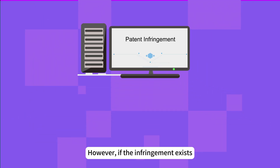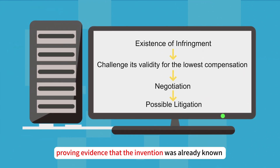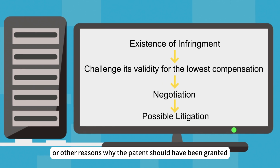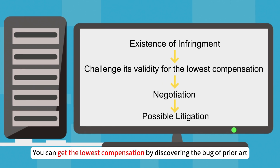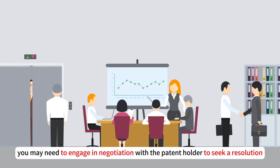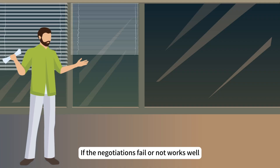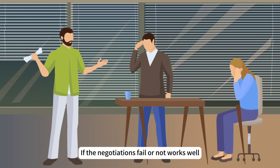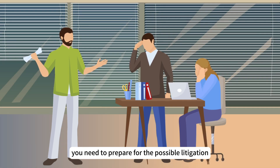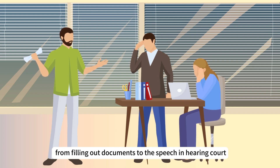If infringement exists, you can challenge the validity of the patent by presenting evidence that the invention was already known, or other reasons why the patent should not have been granted. You can get the lowest compensation by discovering prior art. Before going to court, engage in negotiation with the patent holder to seek a resolution, which may include licensing agreements, settlements, or design changes to avoid infringement. If negotiations fail, prepare for possible litigation—your patent attorney will guide you through the legal process from filing documents to the hearing in court.